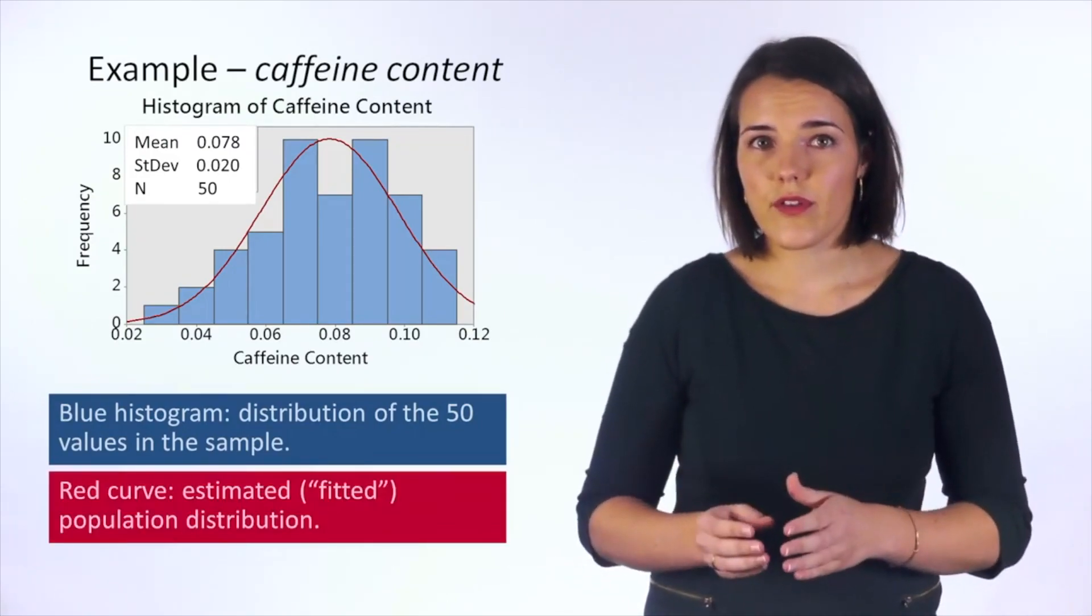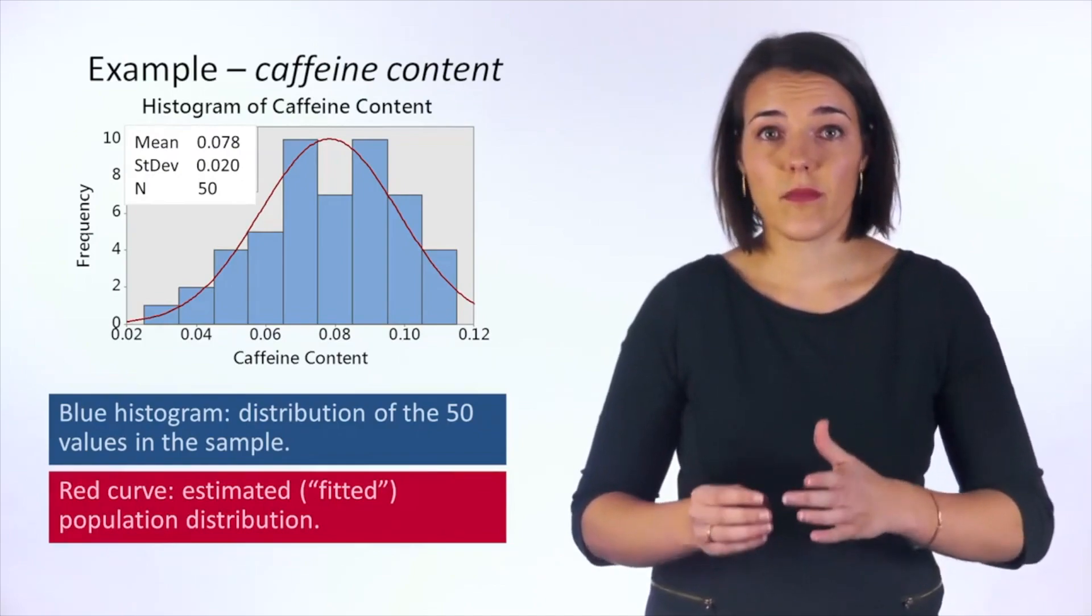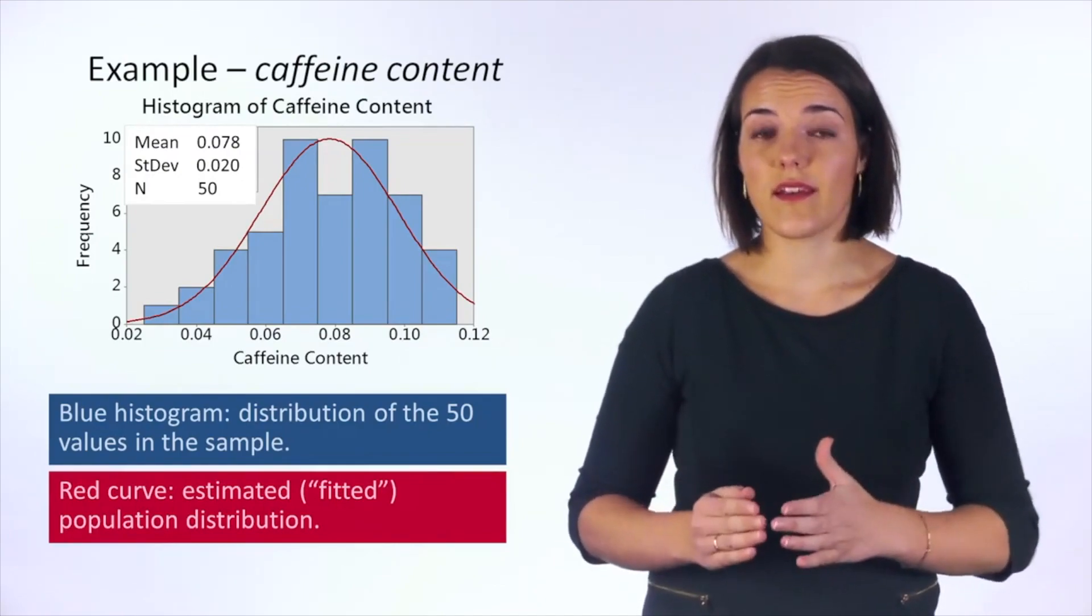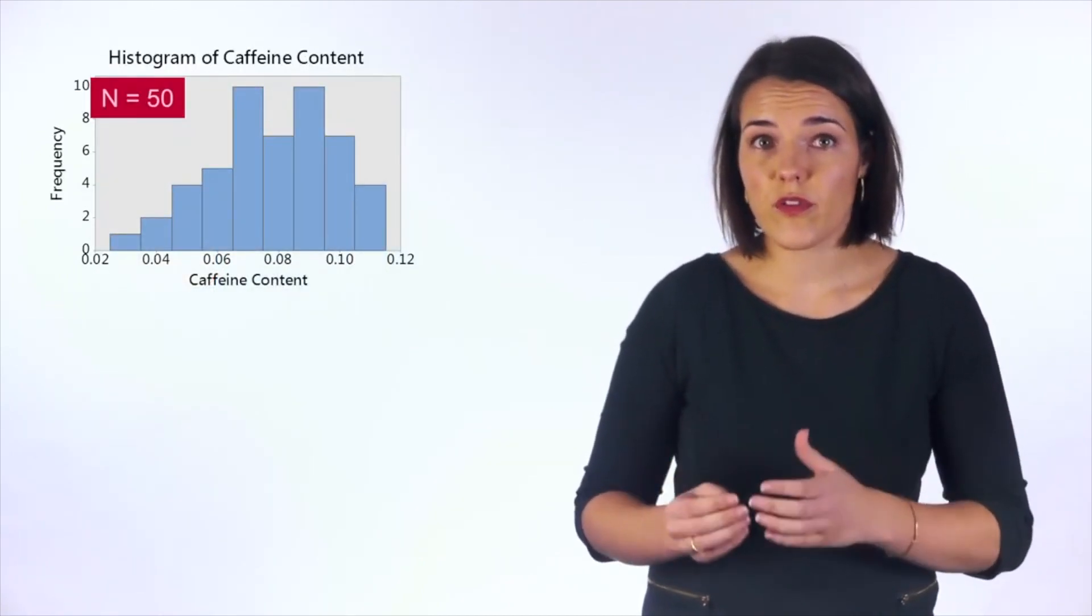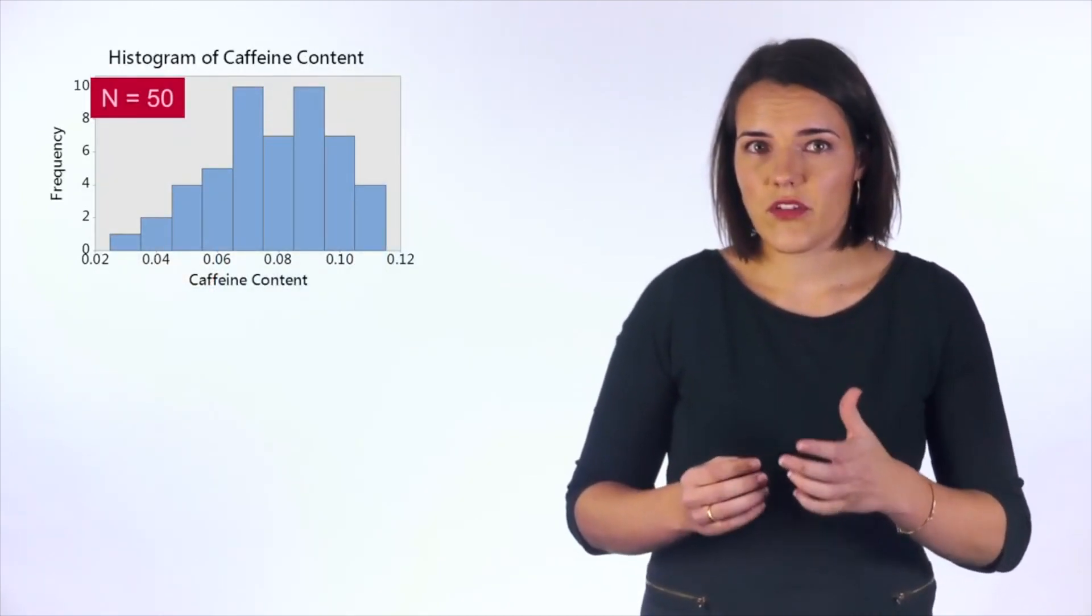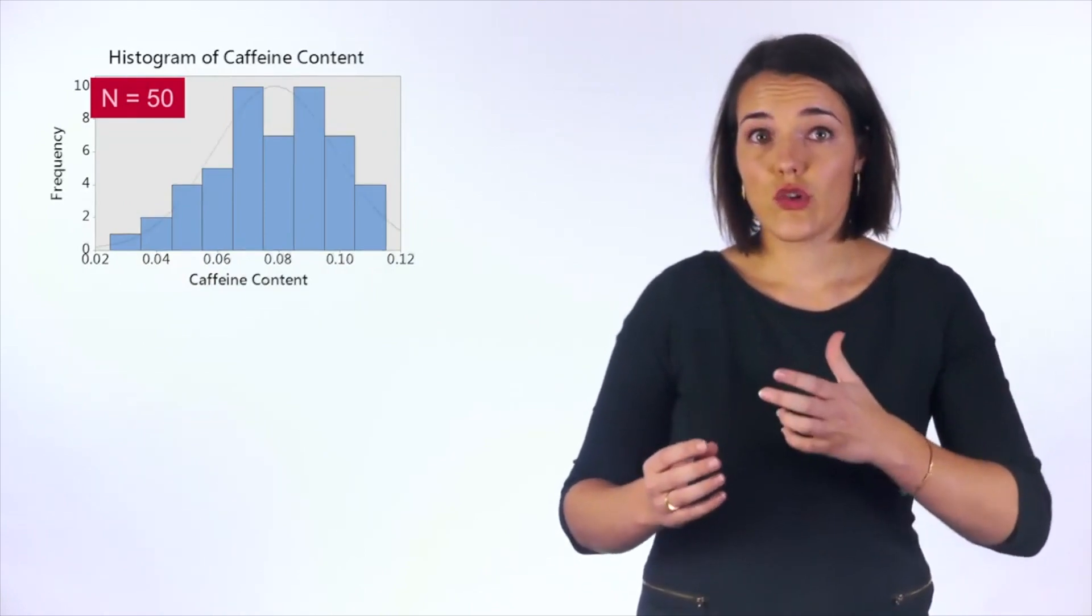The red curve is the population distribution that Minitab fitted to the data for us. When the number of measured values is just 50, you need some imagination to recognize the normal distribution.